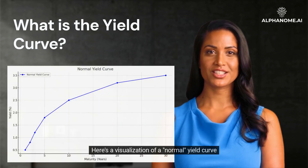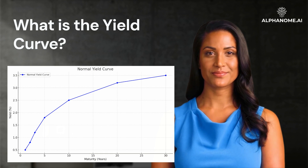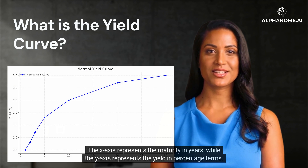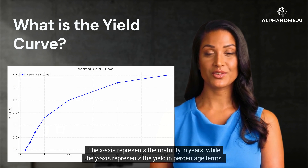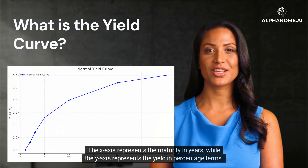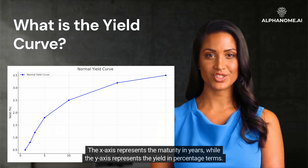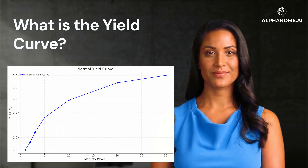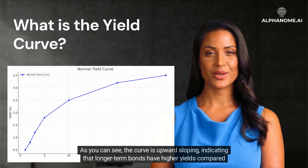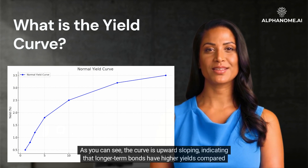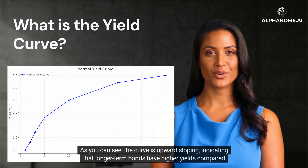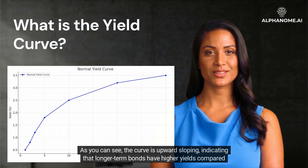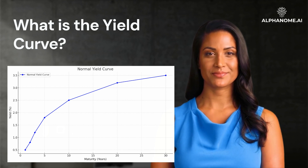Here's a visualization of a normal yield curve. The X-axis represents the maturity in years, while the Y-axis represents the yield in percentage terms. As you can see, the curve is upward sloping, indicating that longer-term bonds have higher yields compared to shorter-term bonds.